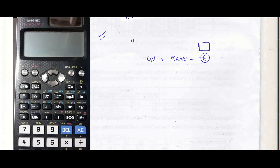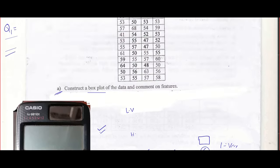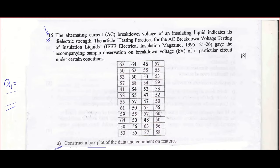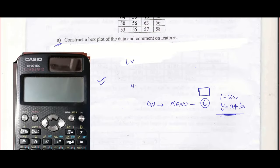Once you do that, it will ask you: do you want to choose one variable? One variable will be written as 'one variable' itself. Two variables will be written as a linear relation — y equals a plus bx or something. In your exam, focus on only two things: one variable or two variables. By looking at this question, there is only one variable, so choose one variable. Press menu 6 and choose one variable.